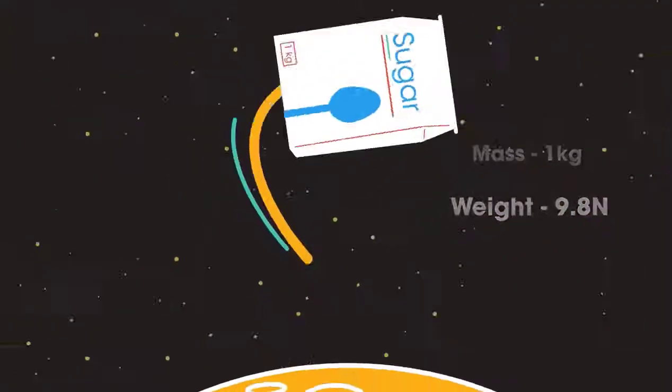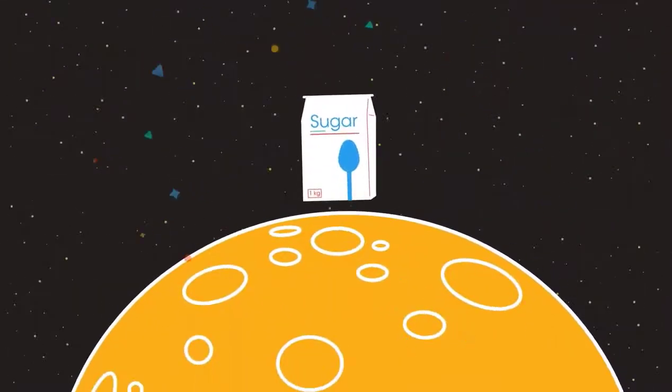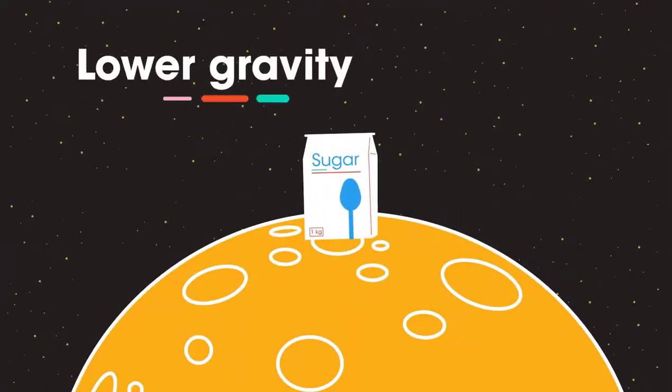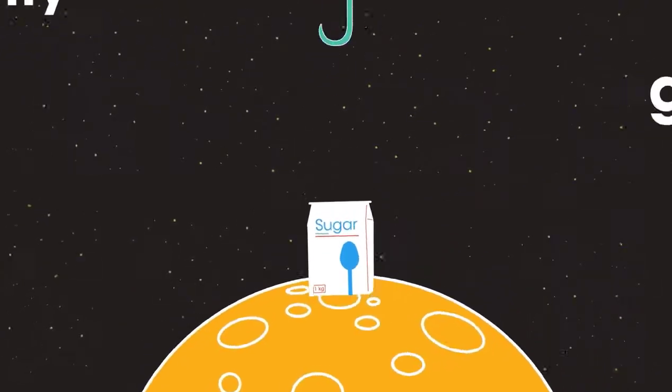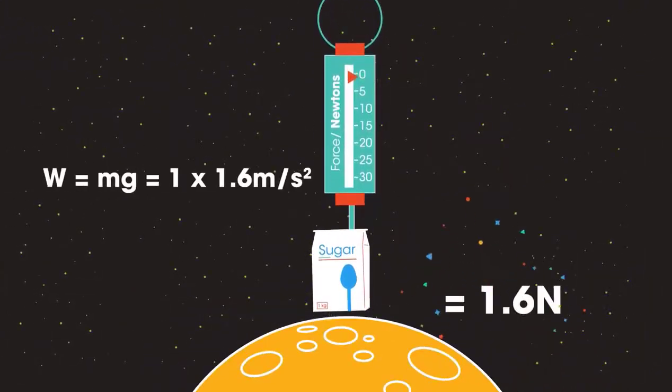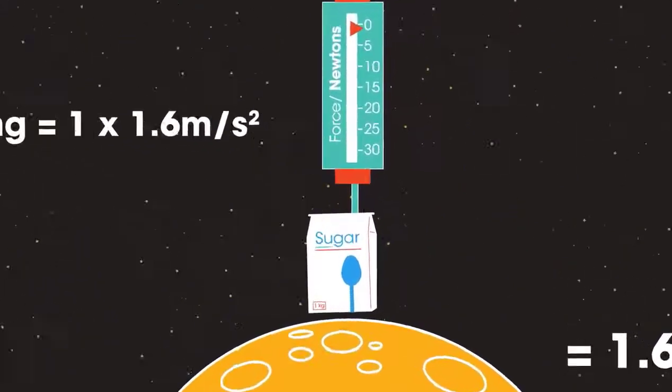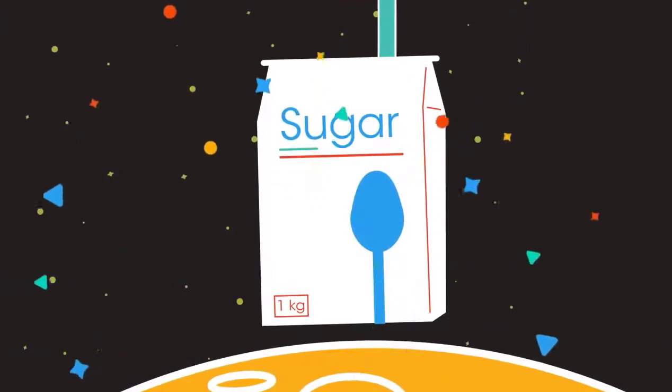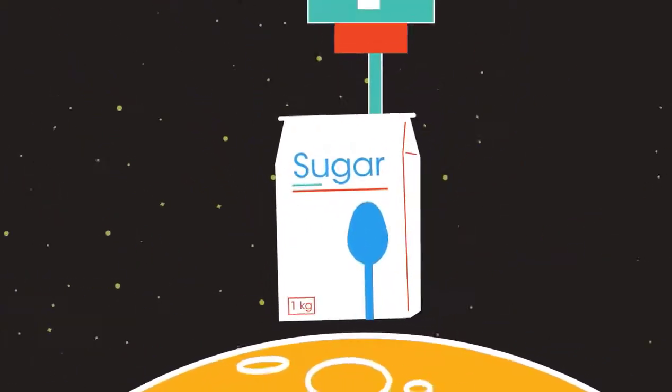Now let's take this bag of sugar to the moon. The moon is much less massive than the Earth, and so has a lower gravity. On the moon, G is only 1.6 meters per second per second. See how the weight has dropped compared to when it was on Earth? But notice, we still have the same amount of sugar. There is still 1 kilogram of stuff. The weight has changed, but not the mass.